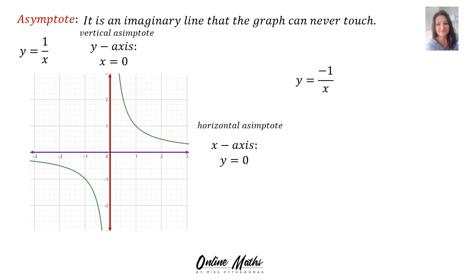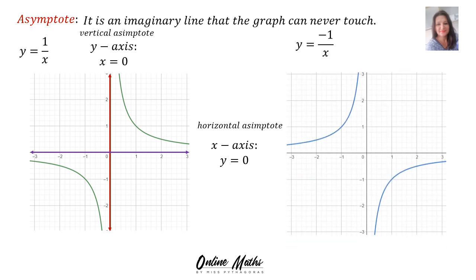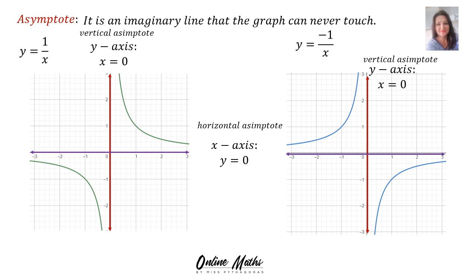The x-axis equation is the line y is equal to 0. When I give you the equation y is equal to minus 1 over x — with the sketch in the second and the fourth quadrant — the vertical asymptote is still the y-axis with equation x equals 0, and the horizontal asymptote is still the x-axis with equation y equals 0.